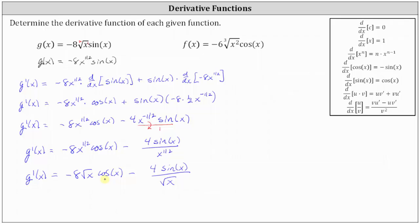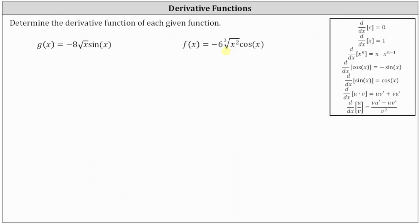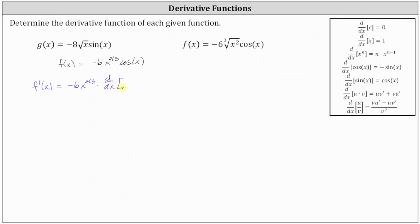Now let's find the derivative of f of x. Let's write the cube root of x squared using a rational exponent. So we have f of x equals negative 6 x to the power of 2 thirds cosine x. Again, we'll have to apply the product rule to determine f prime of x. Let's find the two derivatives.